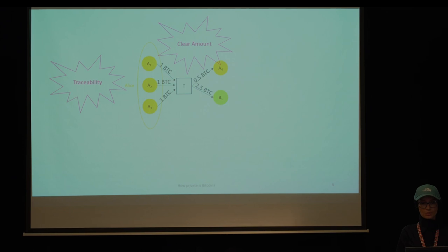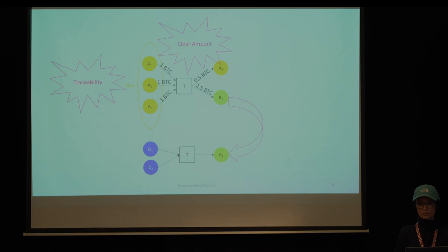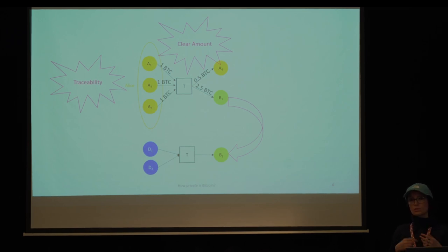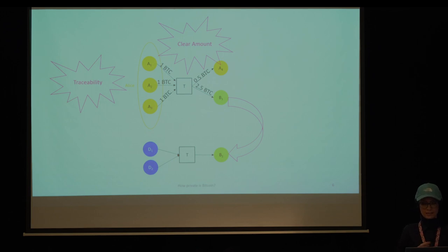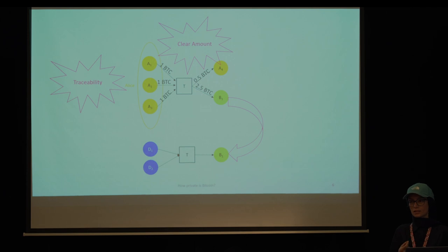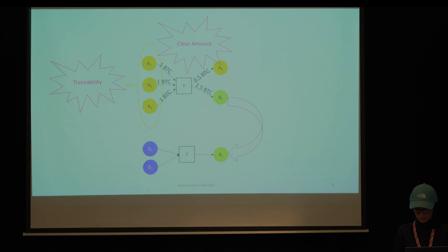This heuristic perfectly works to cluster and de-anonymize Bitcoin addresses. The second issue is traceability. Another significant concern in Bitcoin privacy is linkability, which refers to the ability to connect different transactions when the same address is reused, as whenever an address is reused it links the transaction to all previous transactions that appeared in the blockchain.